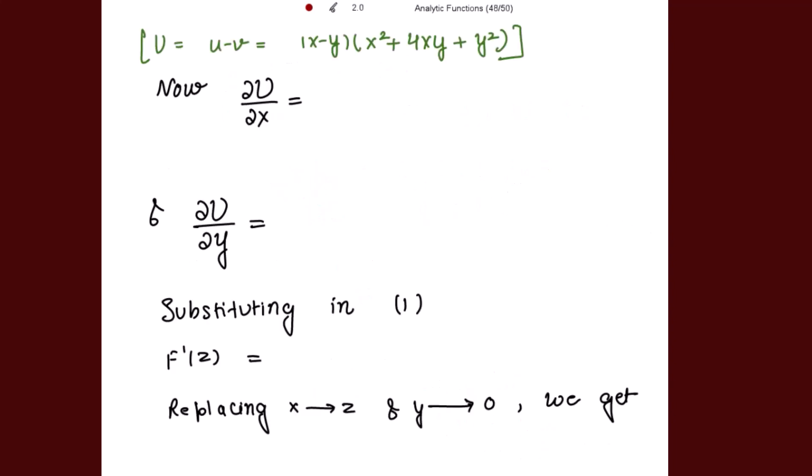From the CR equations, partial V over partial x is negative partial U over partial y. So F'(z) becomes partial U over partial x minus iota partial U over partial y. Now I can differentiate capital U with respect to x and also with respect to y to get F'(z) very easily. Capital U is given to us as u minus v.